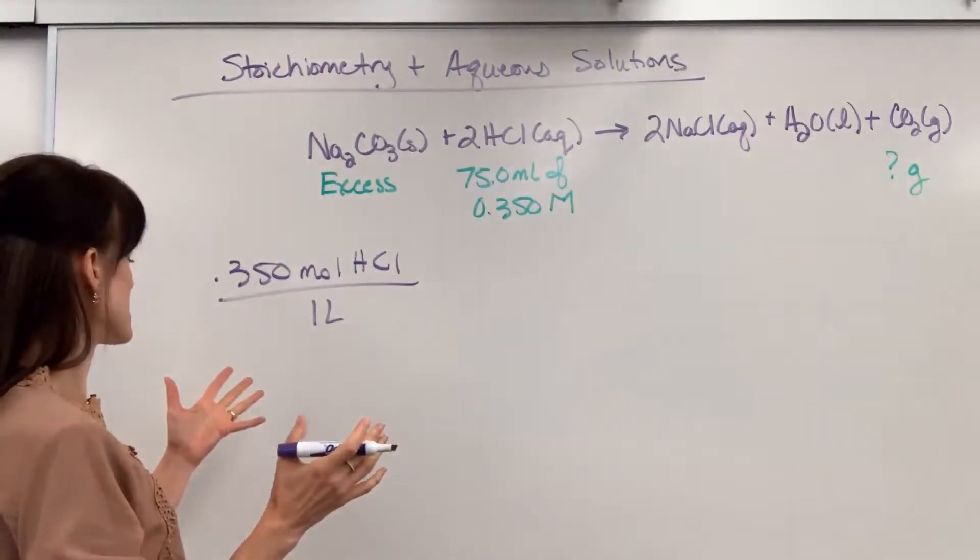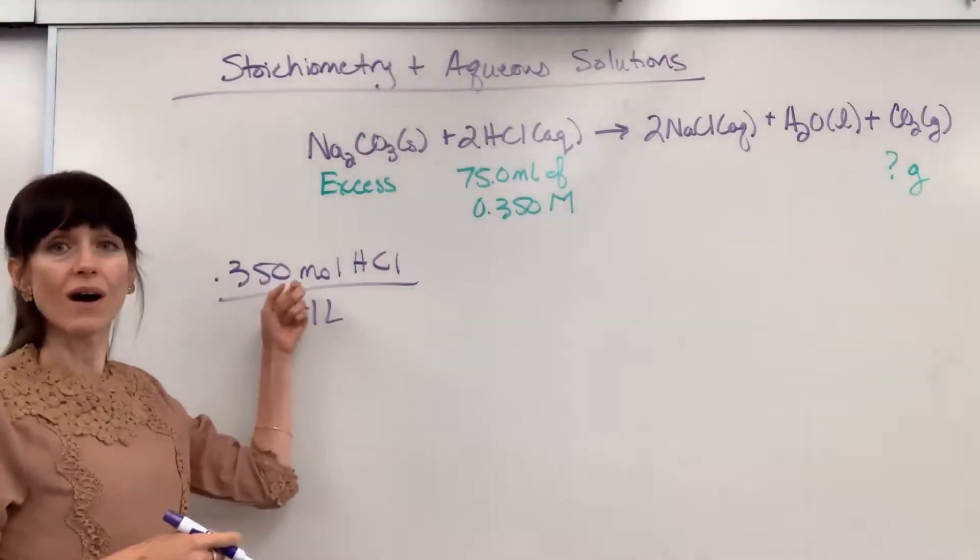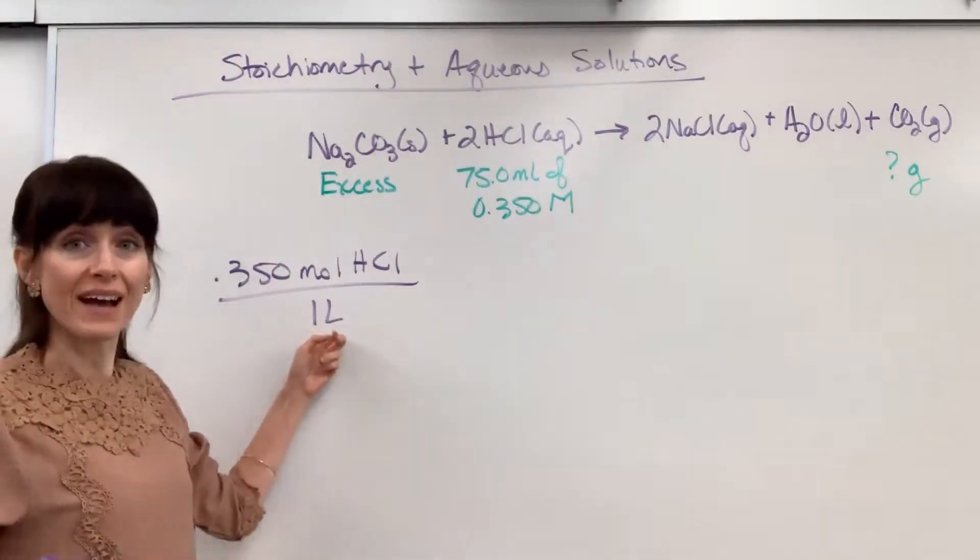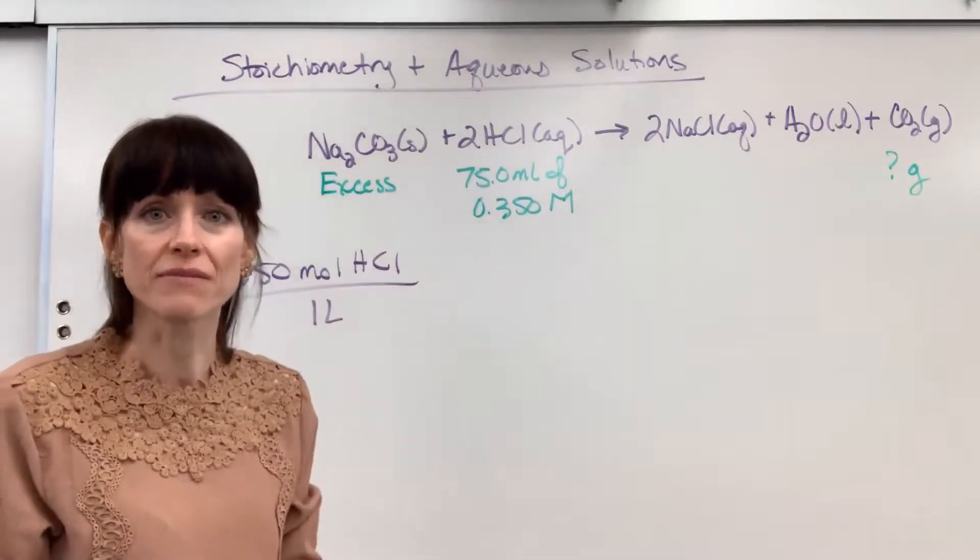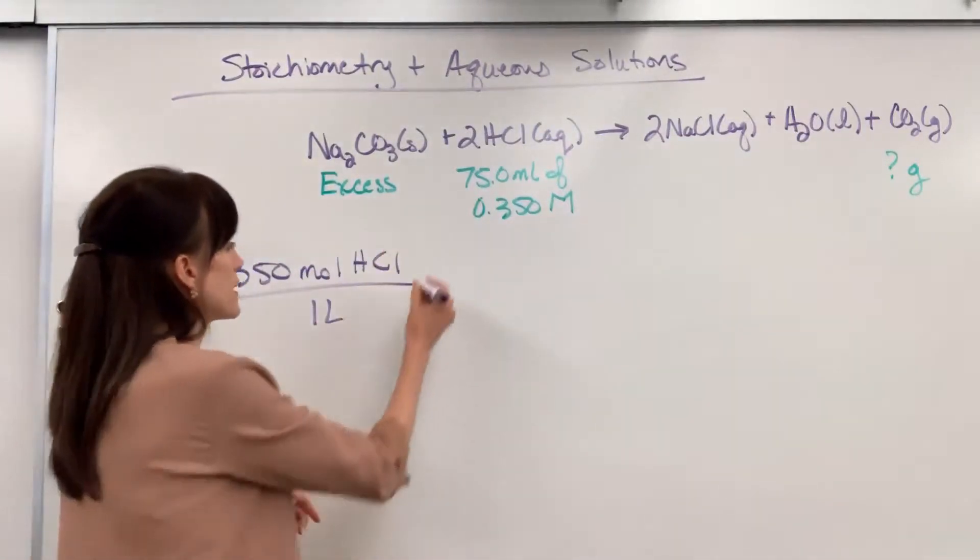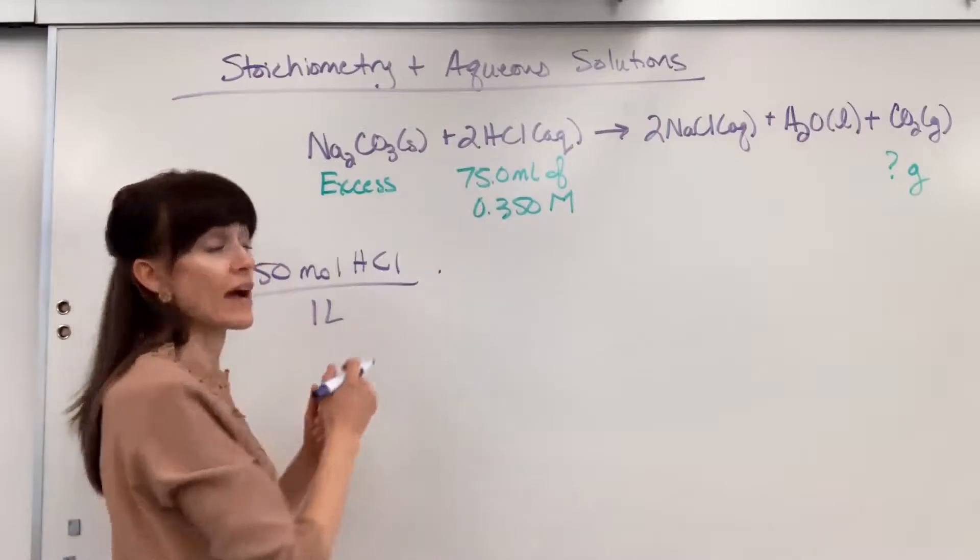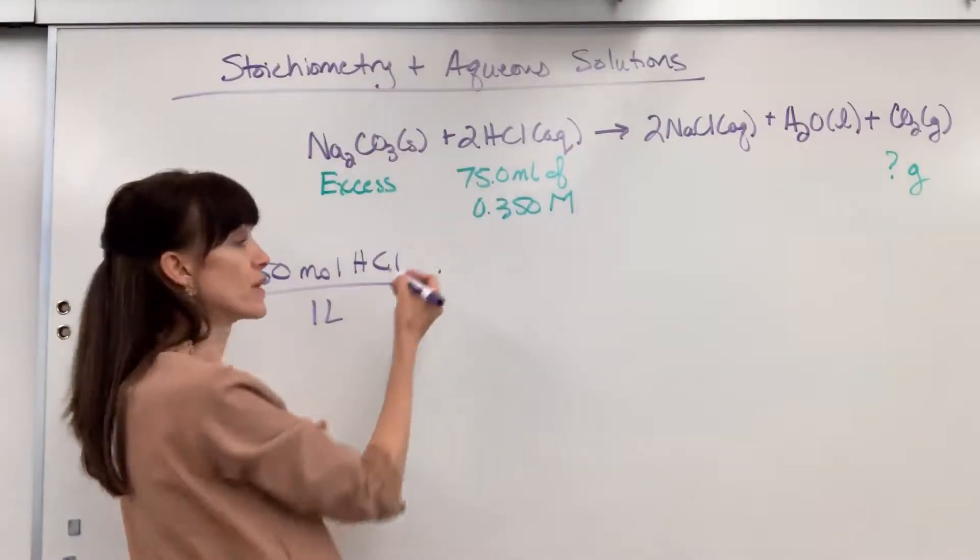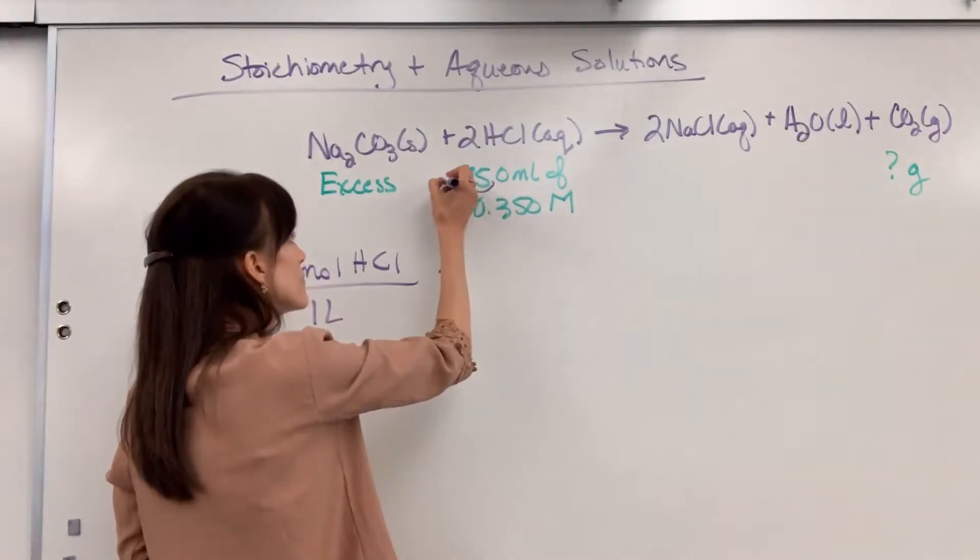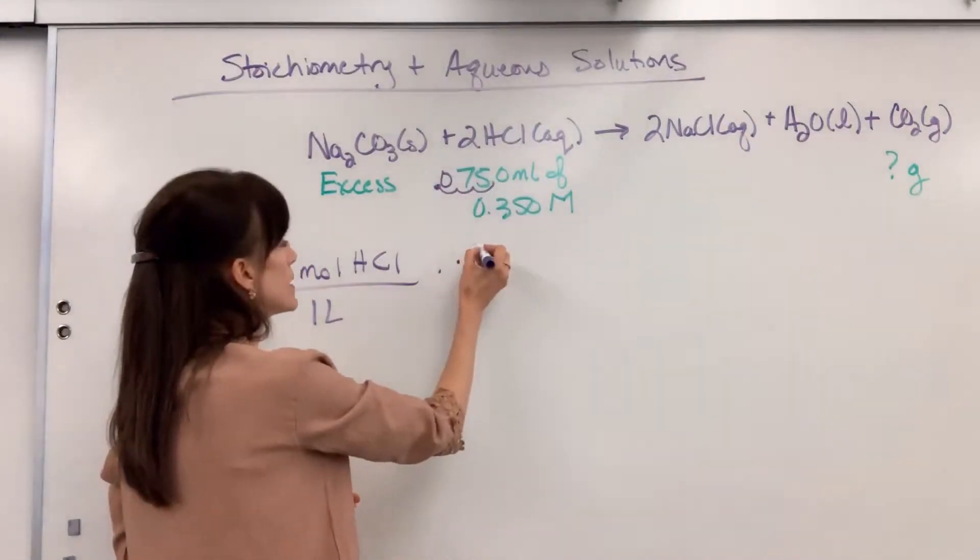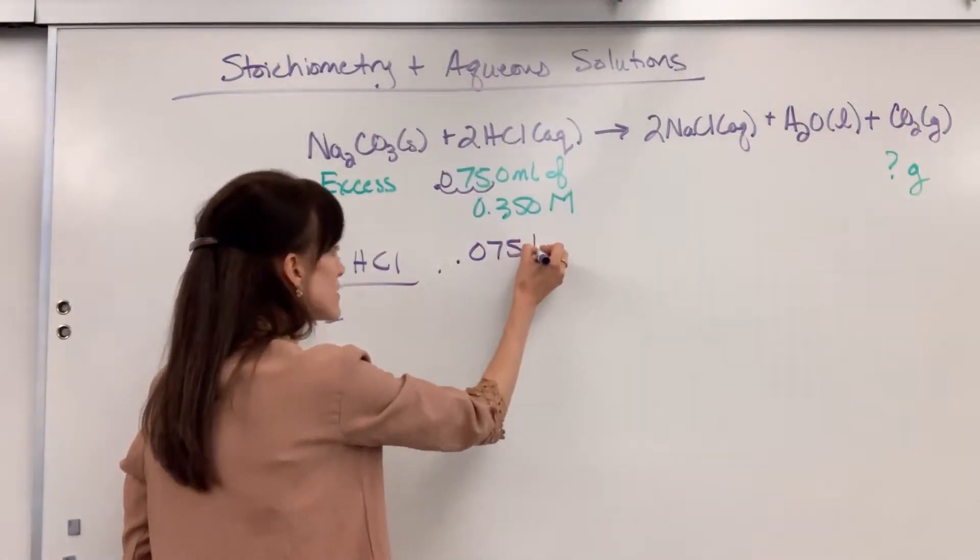So I'm looking at this. I want to get moles all by itself. That means I've got to get rid of liters. There it is. They gave us 75 mils. So if I multiply this, now notice it's liters so I have to bring that to liters. There are a thousand mils in one liter. I can go one, two, three. So that would be 0.075 liters.